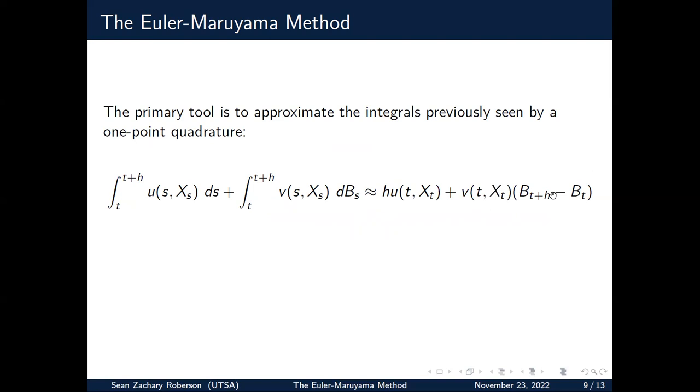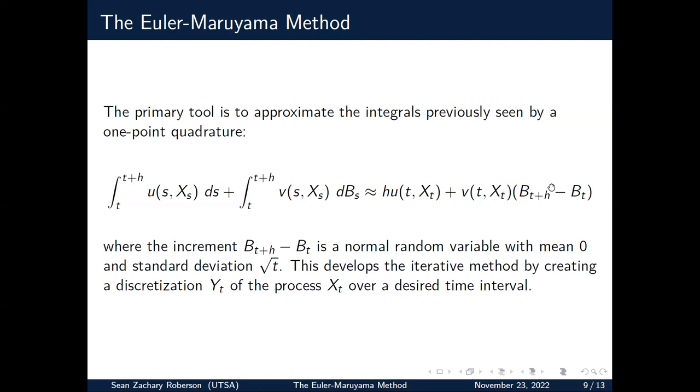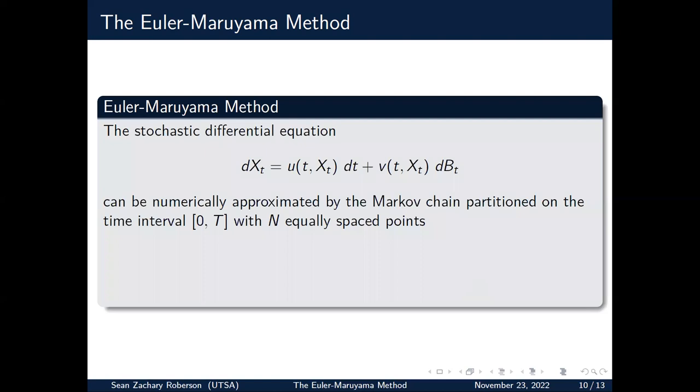We can do this by the mean value theorem for small enough h. And for the second integral, we do a similar looking thing, except now our jump is going to be in our Brownian motion here, where we take two Brownian motions at t plus h and t. And these Brownian motions are normal random variables themselves, but a fun thing is that the increment, this difference, is normally distributed with mean zero and standard deviation square root h. So this is based off the lag, and these increments are independent and normally distributed. And so this creates an iterative method by creating a discretization y of this process x.